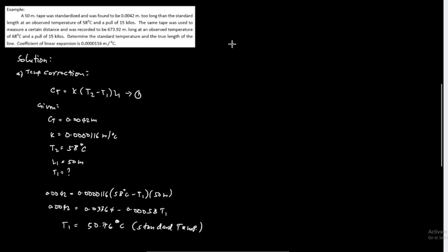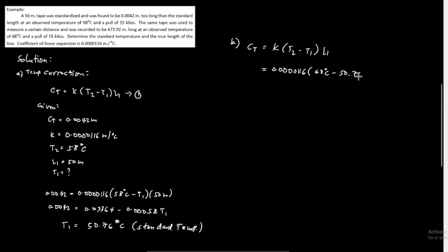Next, we find the true length. Using the temperature correction formula C sub T equals K times (T sub 2 minus T sub 1) times L sub 1, with the new temperature of 68 degrees Celsius: K equals 0.0000116, T sub 2 equals 68 degrees Celsius, T sub 1 equals 50.76 degrees Celsius, and L sub 1 equals 50 meters. C sub T equals 0.01 meter, and the tape is too long because it is positive.